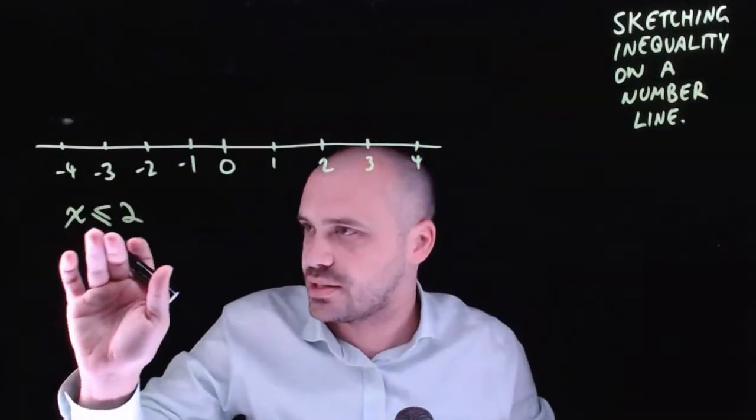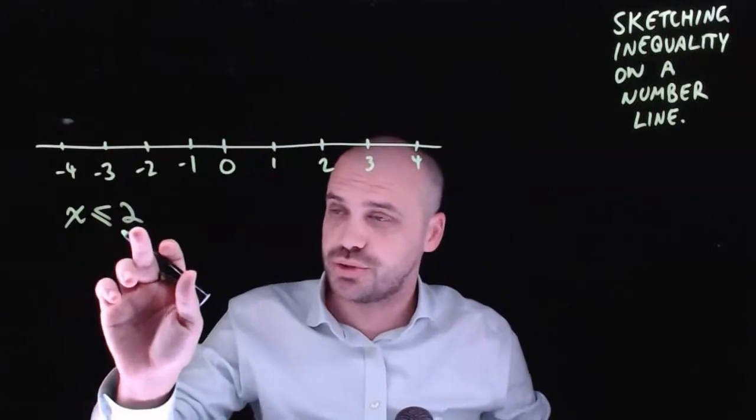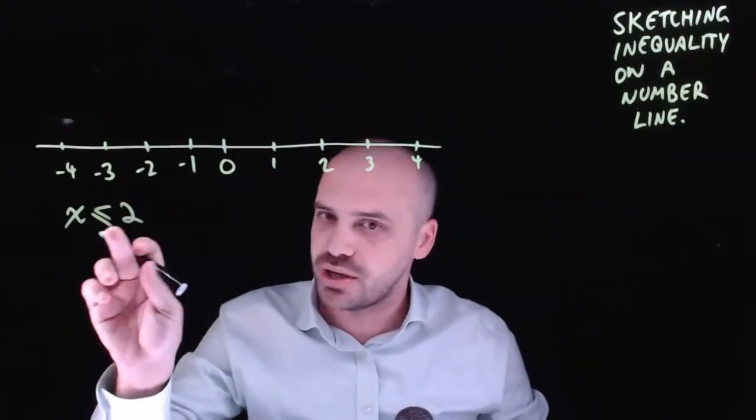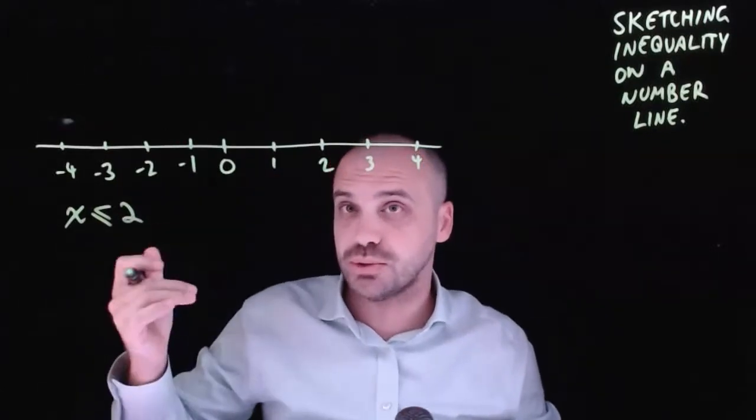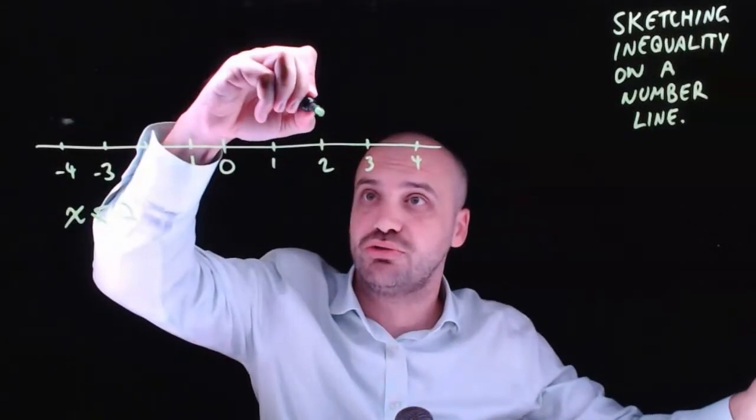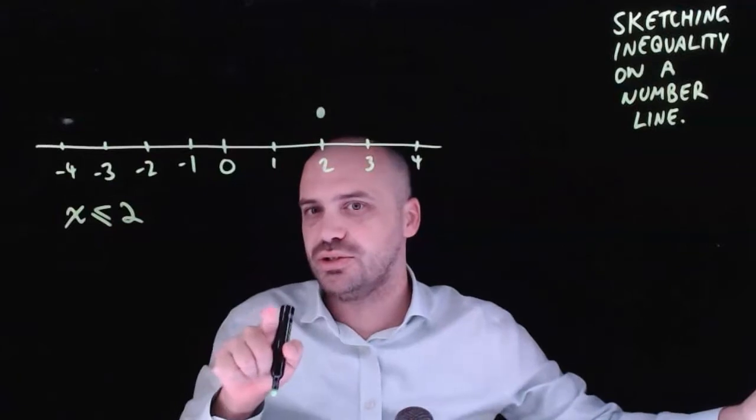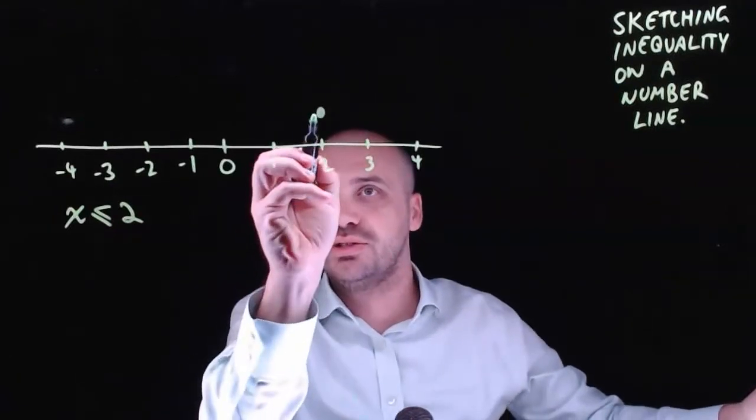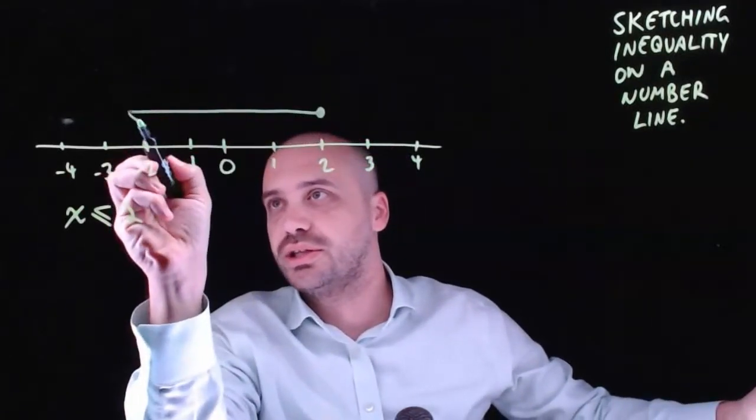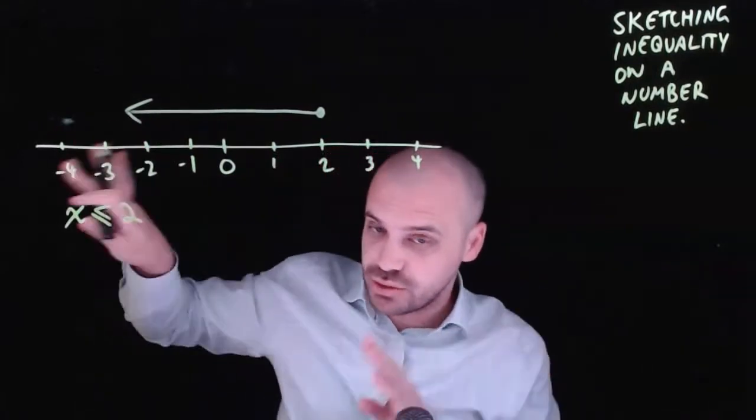Here's an inequality, x is less than or equal to 2. So inside of this, there is x equals 2, which is this dot that we drew just before. But there's also x is less than 2. And to show that x is less than 2, we draw a line in like this, with an arrow saying that it goes on forever.